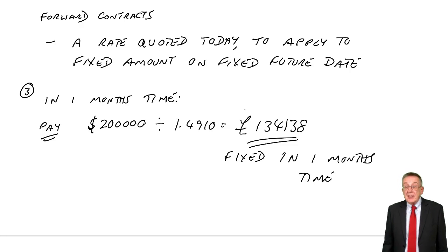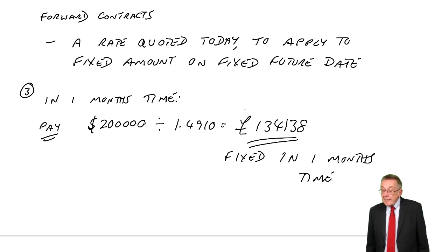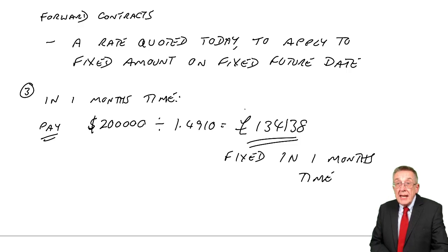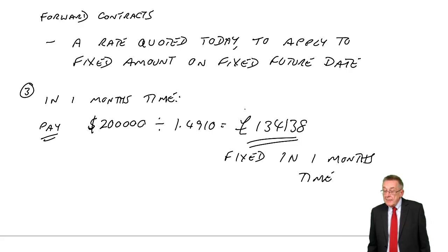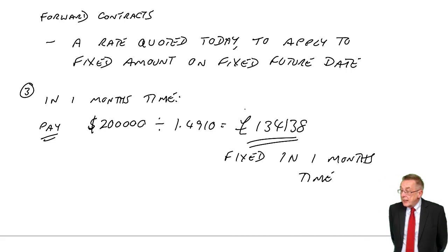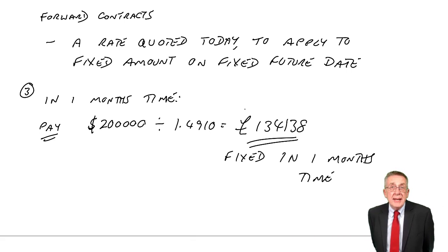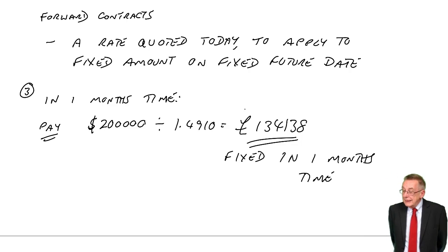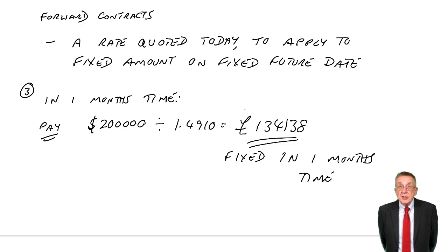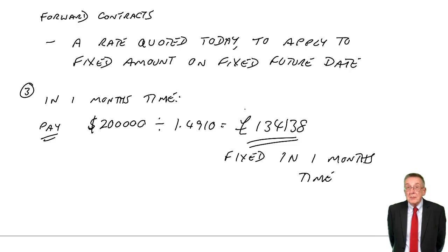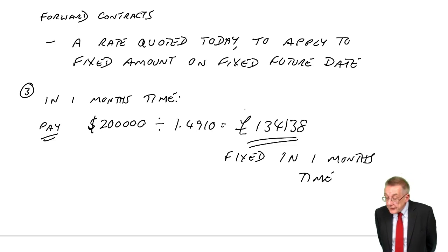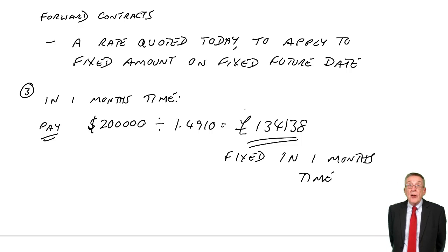The only downside, if you get the chance to mention it, is that it is a fixed amount at a fixed date. So if it turns out that we need to pay it in three weeks' time, or in five weeks' time, we've got a problem. Or if the amount, for some reason, changes, we've got a problem. We have to convert at that rate of that much money in one month.